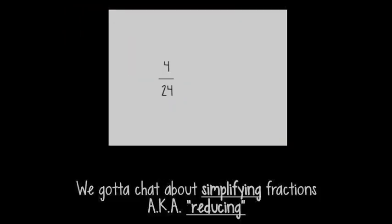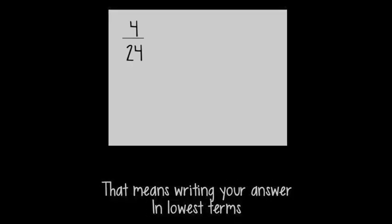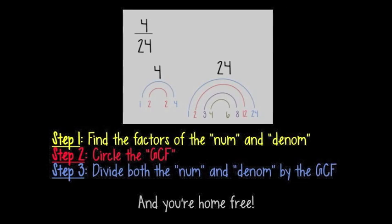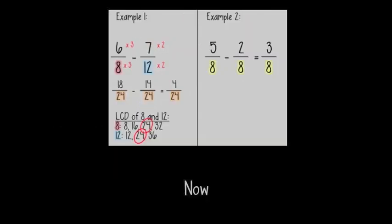Now we got to chat about simplifying fractions, a.k.a. reducing. That means writing your answer in lowest terms — yeah, that's what I mean. Step 1: find the factors of the numerator and denominator. Step 2: circle the GCF. Step 3: divide both the numerator and denominator by the GCF, and you're home free.